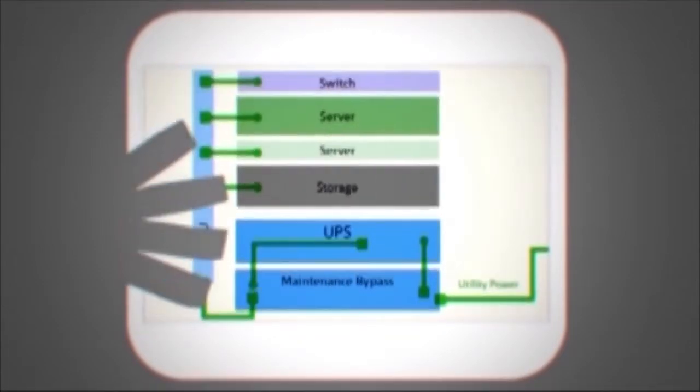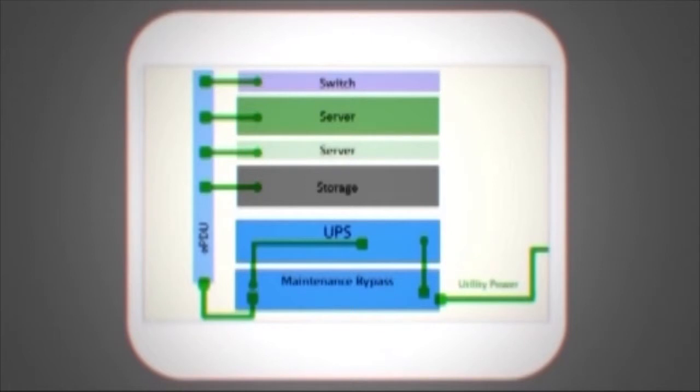For example, here is a UPS powering several servers and storage devices. Attached to the UPS, the bypass routes power from the utility to the infrastructure.